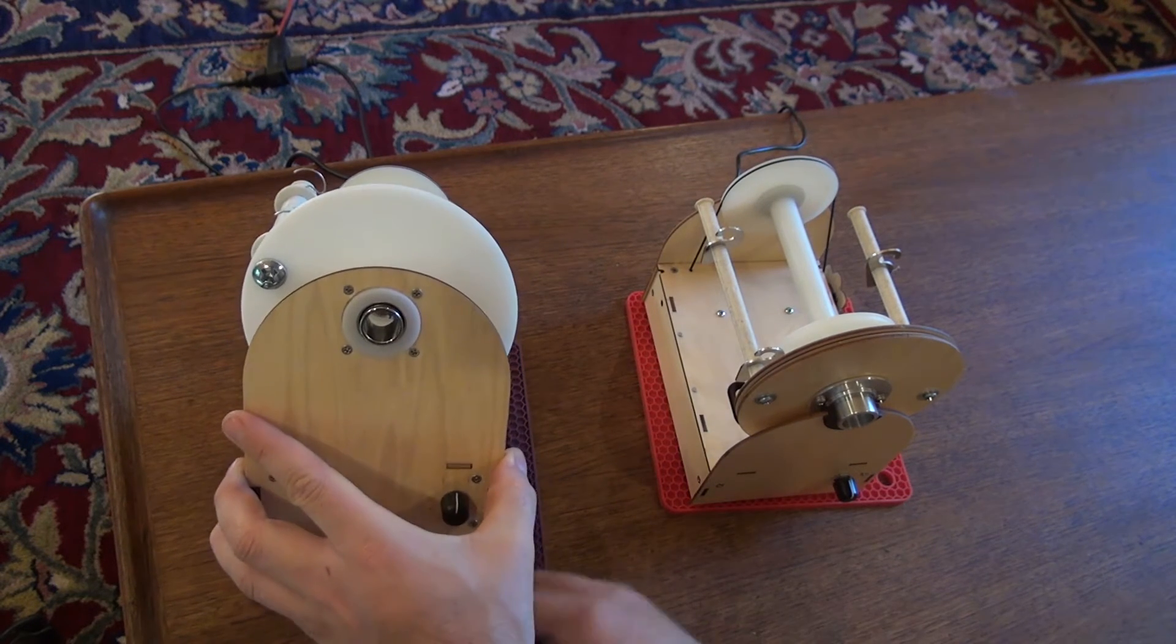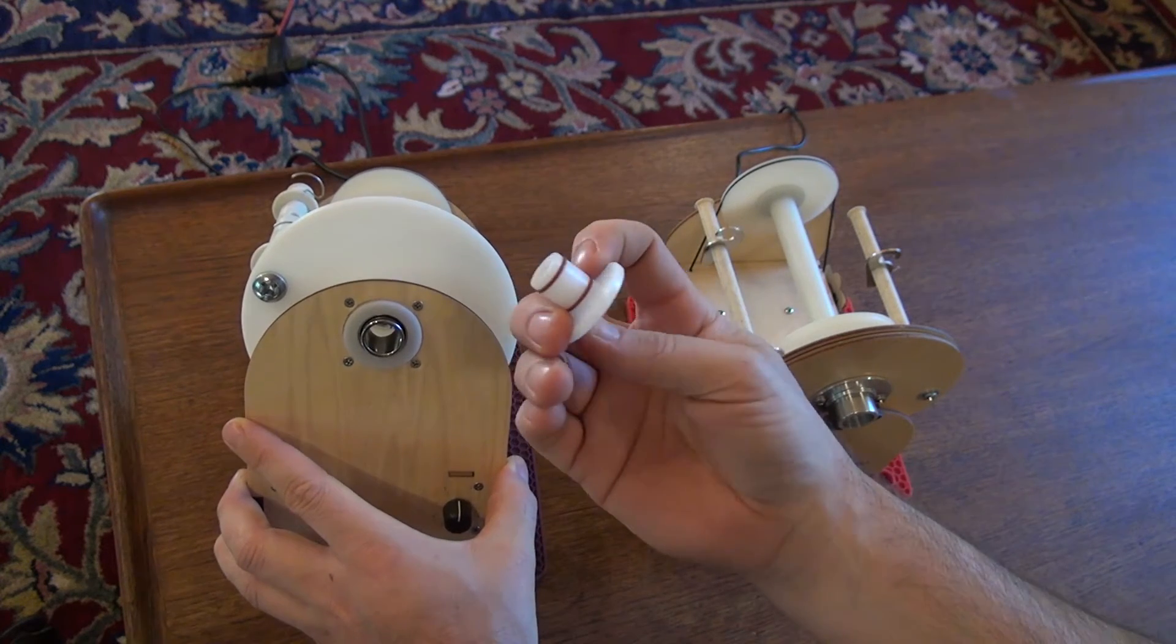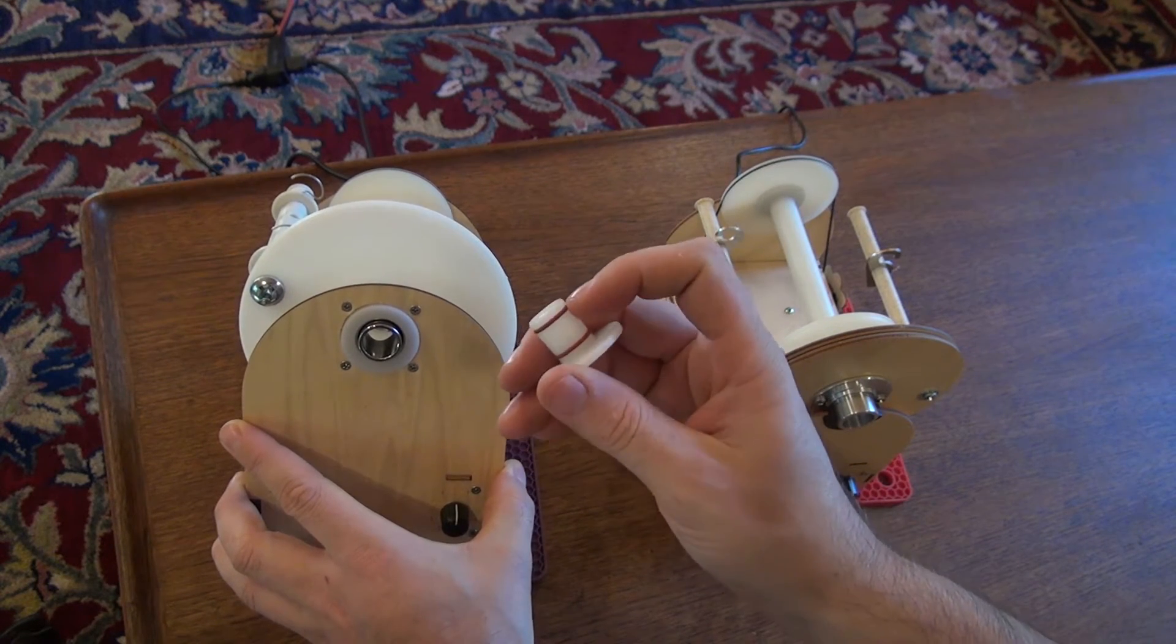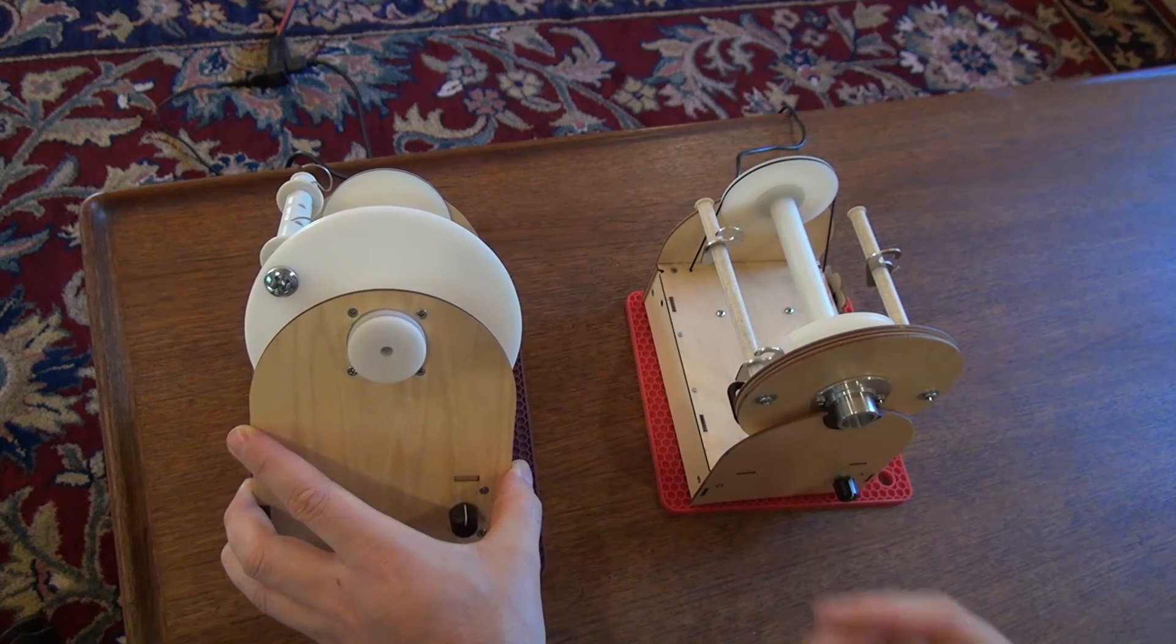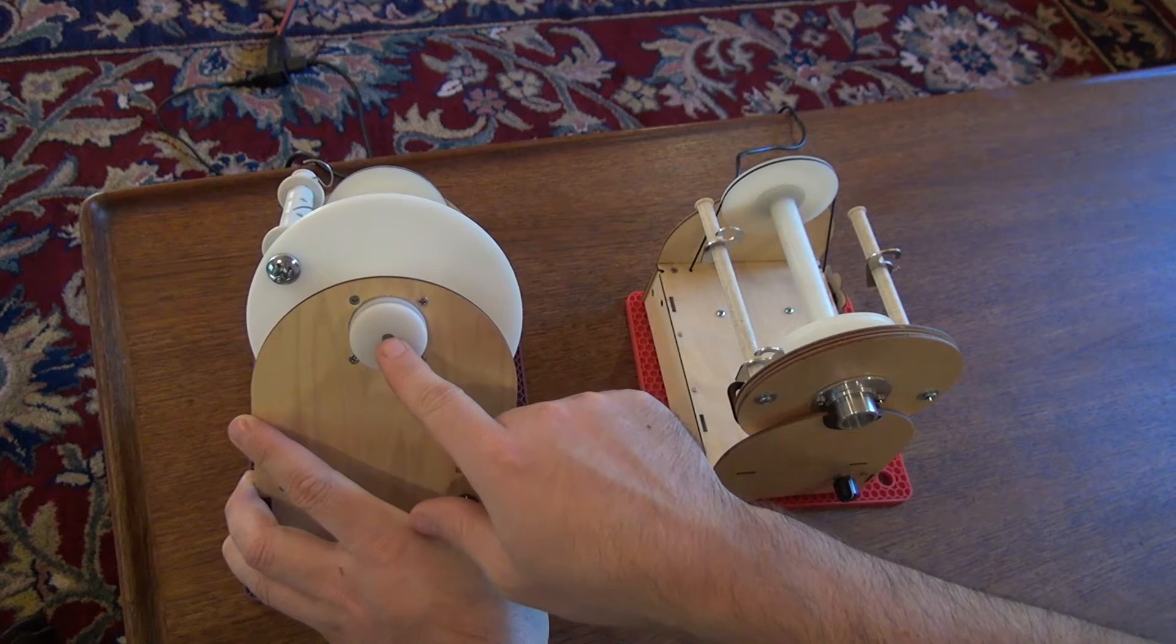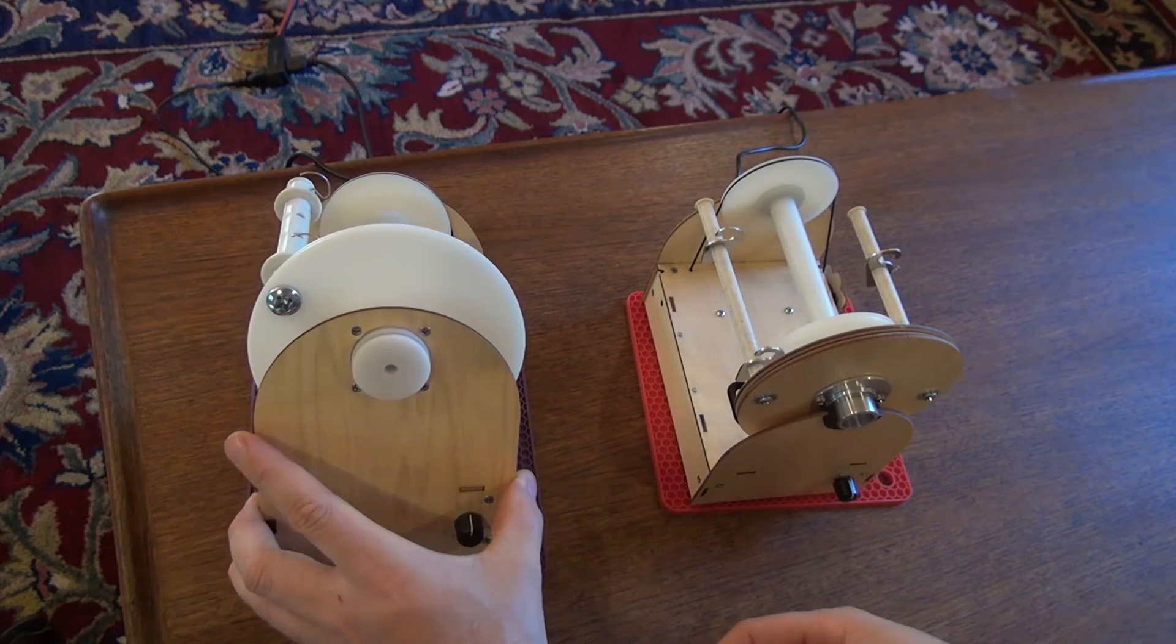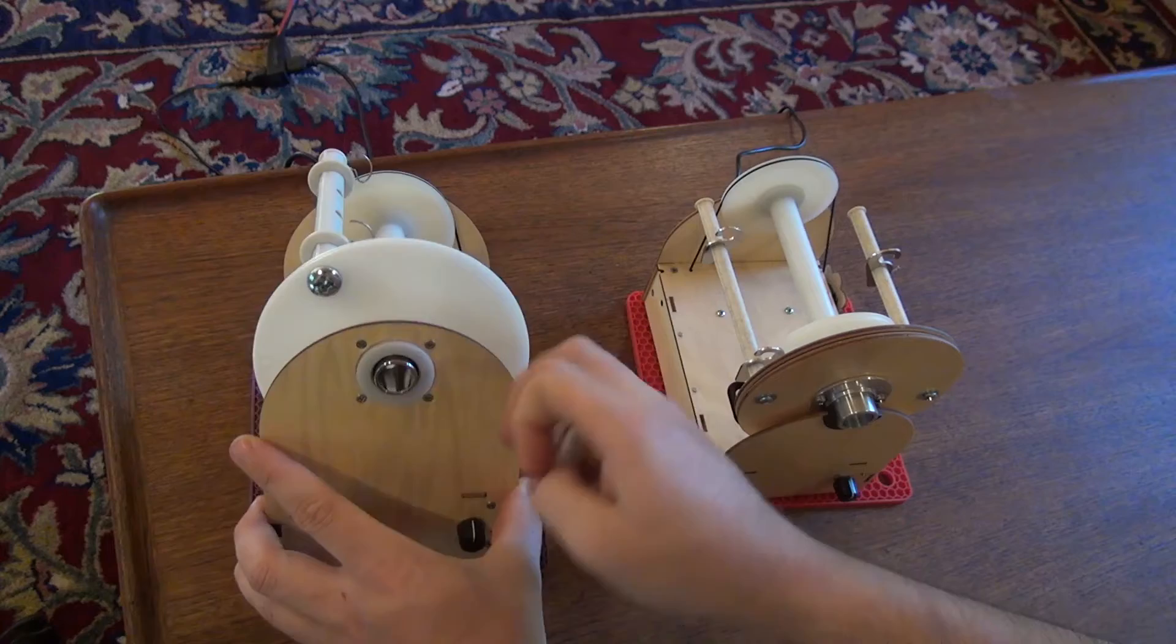Another nice improvement is this reducer. So the previous version, I didn't have a really good reducer system figured out. It was hard to pull it in and put it out. And this one, I put O-rings on the reducer, so it slots in really easy and it stays in nice and firmly. And the point of this is that this reduces the size of the hole, so when you're spinning fine yarn, it wobbles less, which is a really nice feature. And the way this reducer works is much nicer.